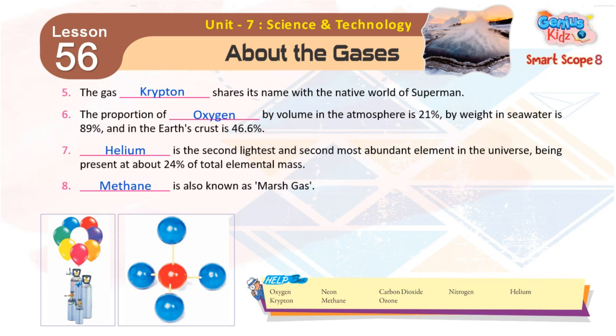5. The gas krypton shares its name with the native world of Superman. 6. The proportion of oxygen by volume in the atmosphere is 21%, by weight in sea water is 89%, and in the Earth's crust is 46.6%.